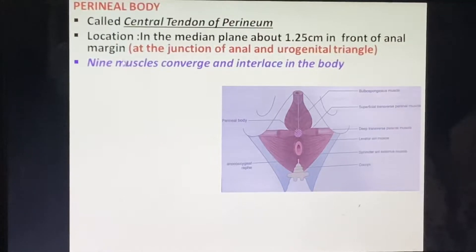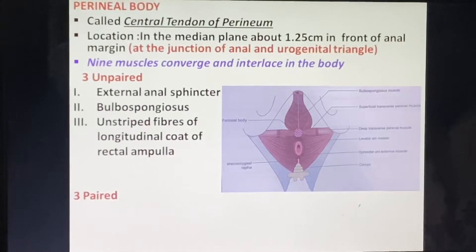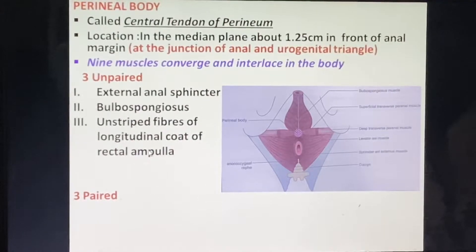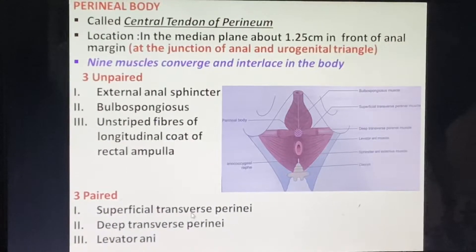Nine muscles converge and interlace in the perineal body: three unpaired and three paired muscles. The unpaired muscles are the external anal sphincter, bulbospongiosus, and unstriated fibers of the longitudinal coat of the rectal ampulla. The paired muscles are superficial transverse perinei, deep transverse perinei, and levator ani muscle.